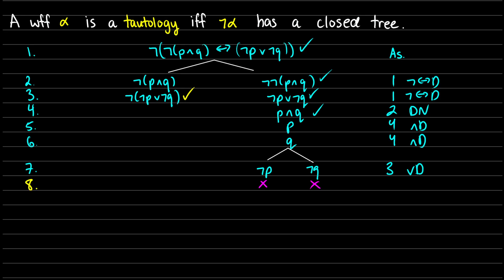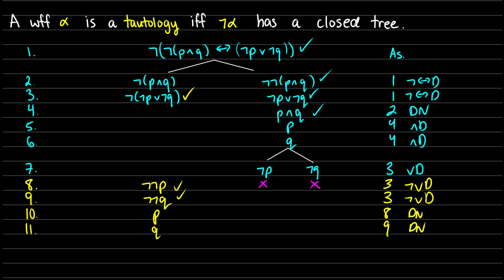So in line 8 and line 9, we're going to get 'not-not-p' and 'not-not-q'. This comes from line 3 on the left branch, and this is not-or decomposition. At this point in lines 10 and 11, let's get rid of those double negations since those don't help us very much. So we'll get p and q — from line 8 and line 9, double negation.